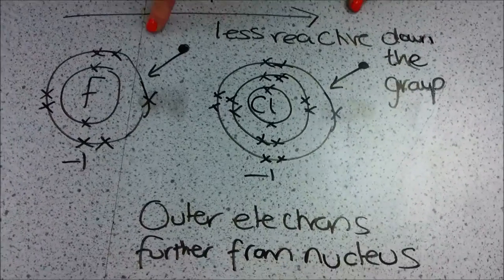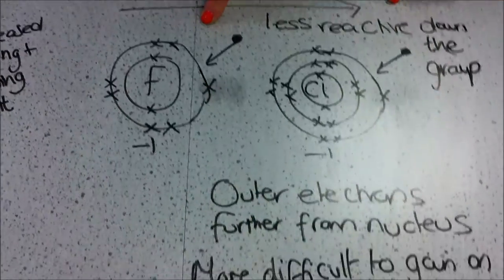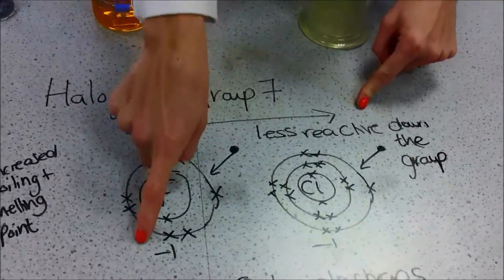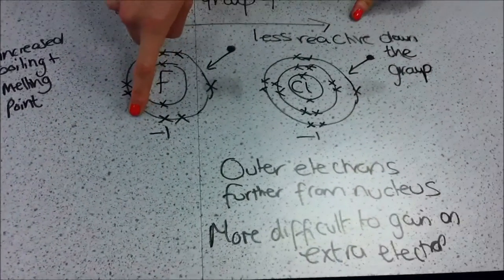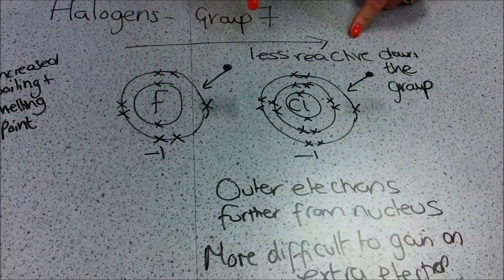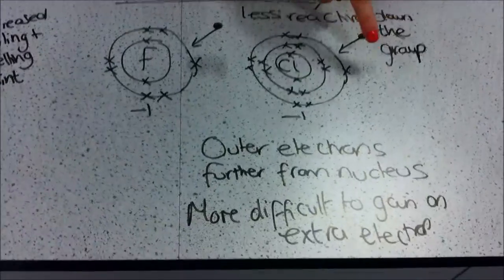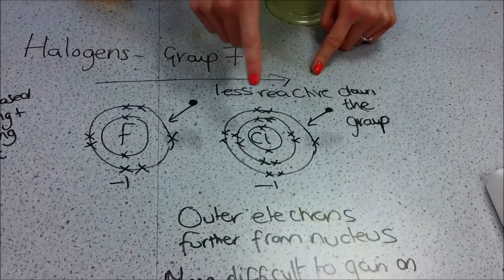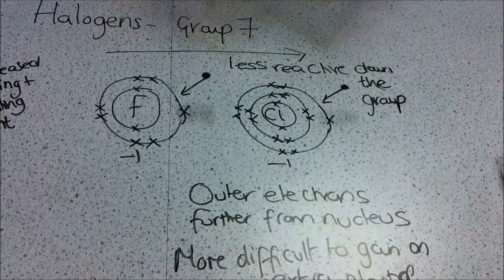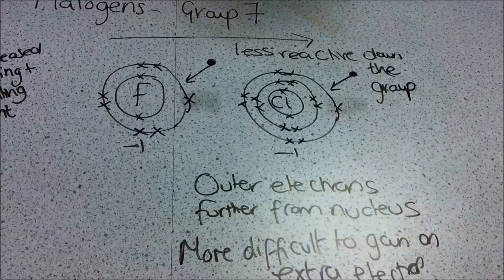Both of these elements want to gain an extra electron to become a minus 1 charge. But, as we go down the group, the last shell is getting further and further from the nucleus, making it really difficult to gain an extra electron.